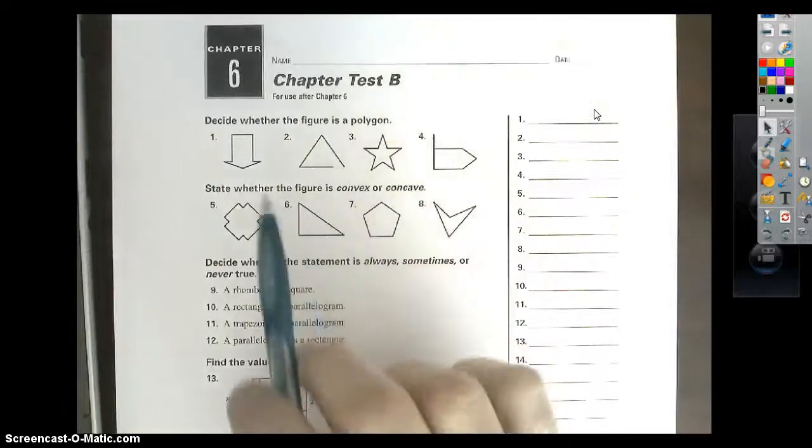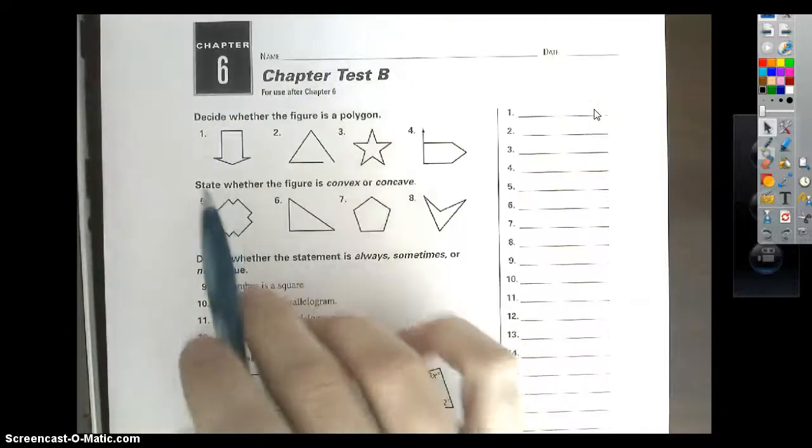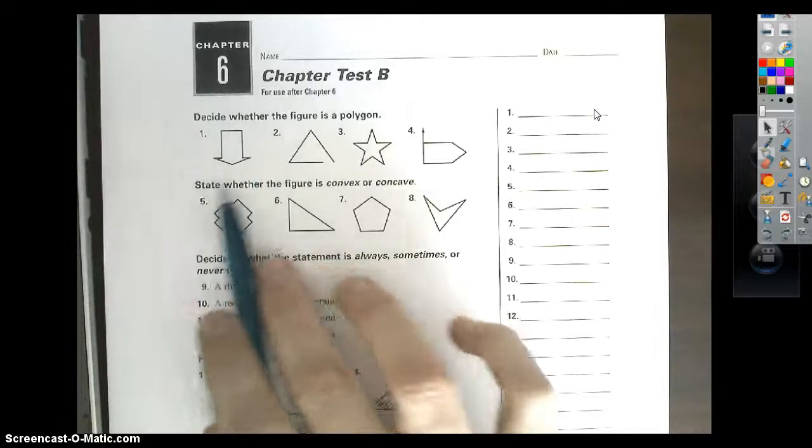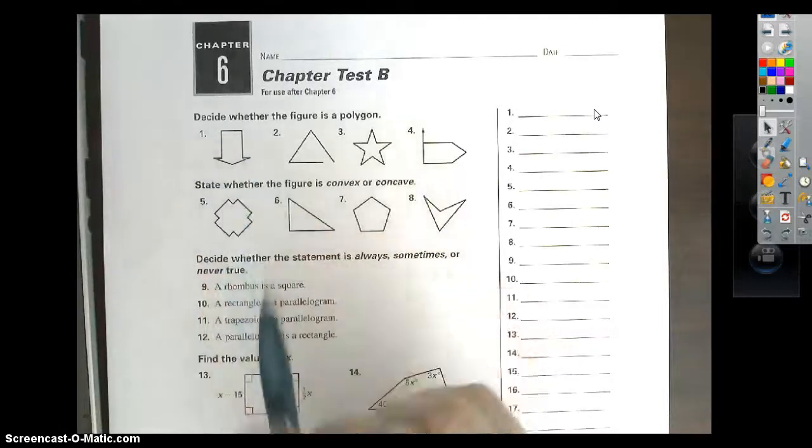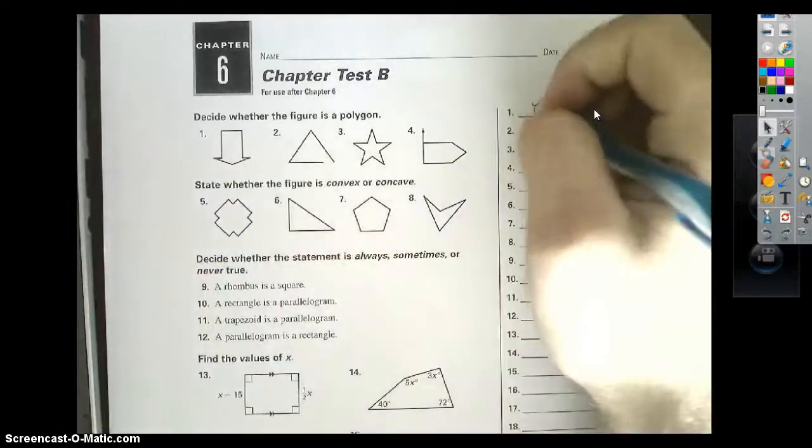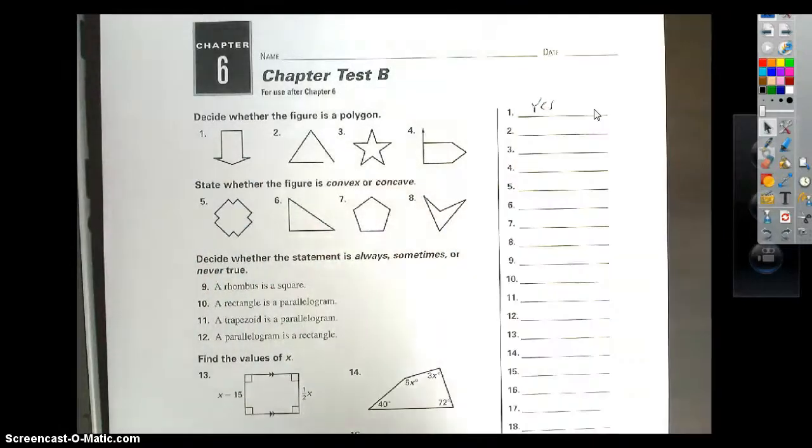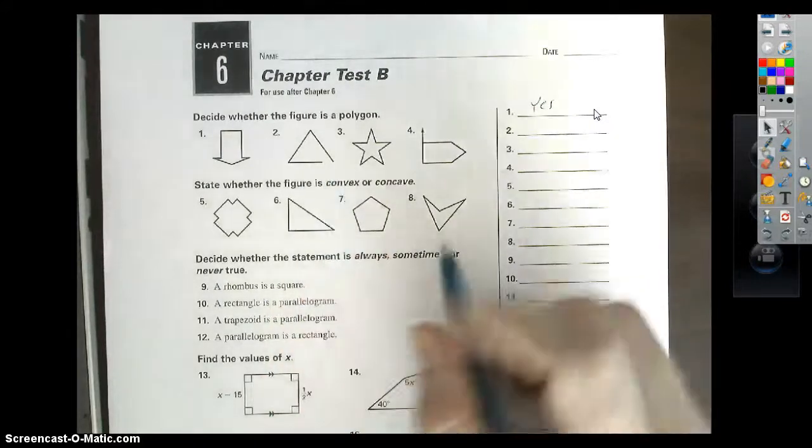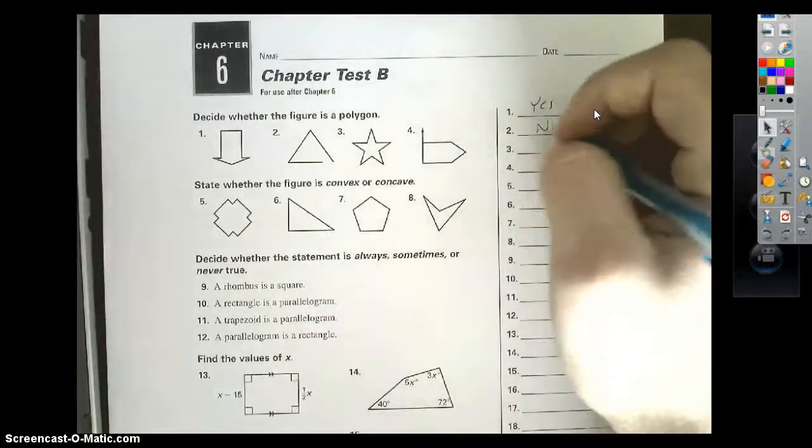To decide whether the figure is a polygon, you need to remember a few things. All straight sides and it needs to close. If you look at number 1, it closes completely, straight sides all the way around. That one's going to be yes, that's a polygon. Number 2, however, you can see there's clearly an opening. It does not close all the way, which doesn't follow the parameters we need, so that's going to be a no.